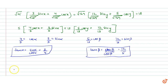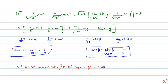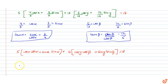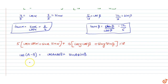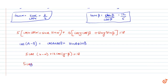अब expression बनता है: 5·(cosx·cosα + sinx·sinα) + 13·(cosy·cosβ + siny·sinβ) = 18. हमें formula पता है कि cos(A−B) = cosA·cosB + sinA·sinB. तो इस formula को use करें तो मिलेगा: 5·cos(x−α) + 13·cos(y−β) = 18. इसको लिख सकते हैं: 5·cos(x−α) + 13·cos(y−β) = 5 + 13.